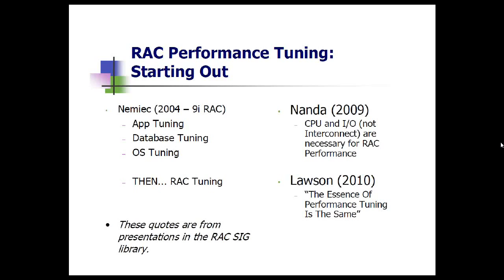The interconnect is a new component, but when you go to do tuning — and there's another Lawson paper from last year on this same thing — when you go to tune a rack system, you really start in the same place, which is: what is it that's taking too long? Somebody calls you and says the application is slow. What is slow? Is it a report? Is it a page? Is it a screen? And then what is it spending its time doing?